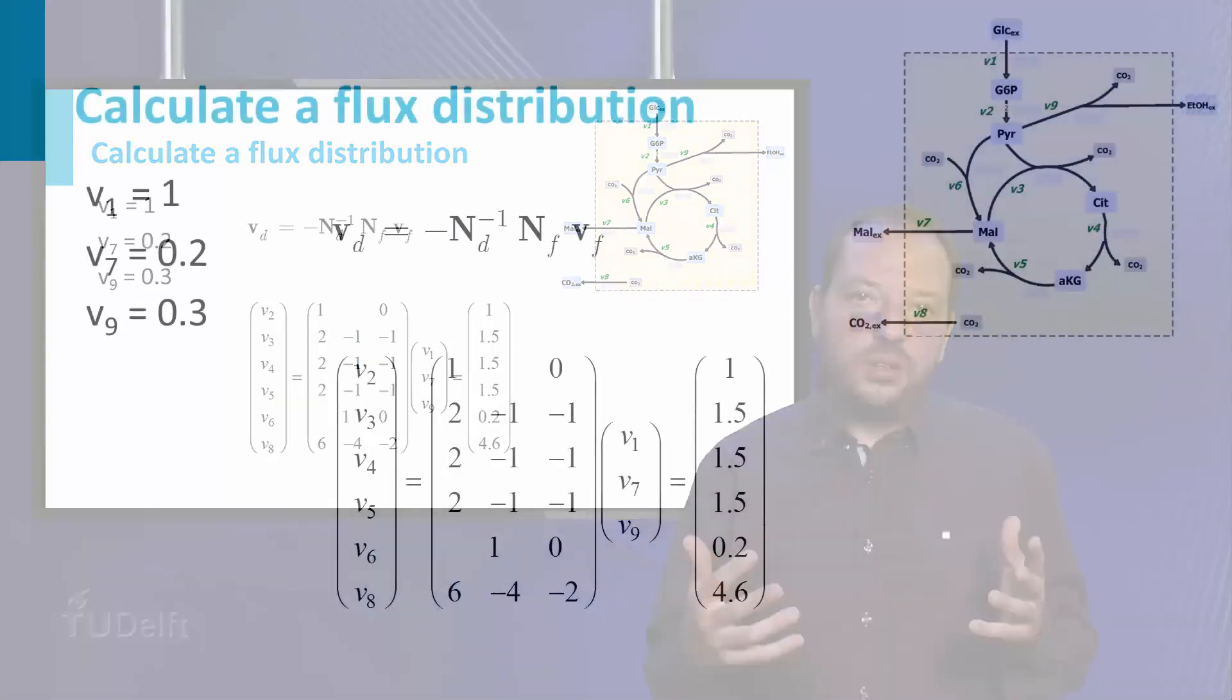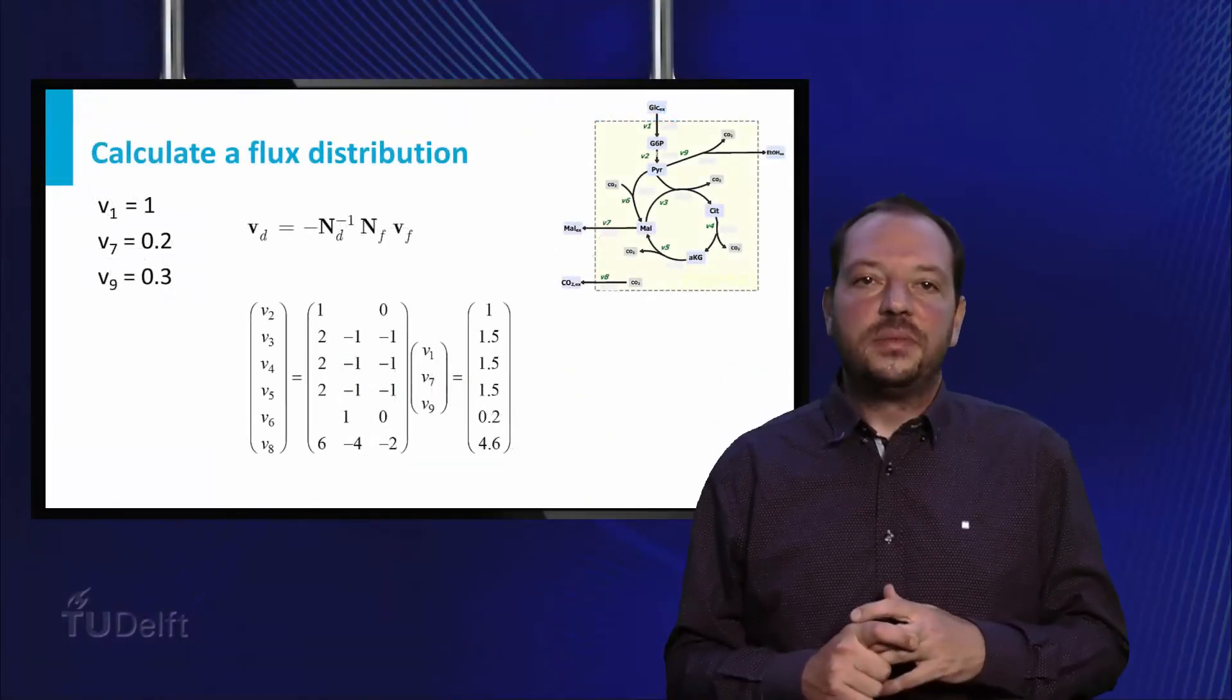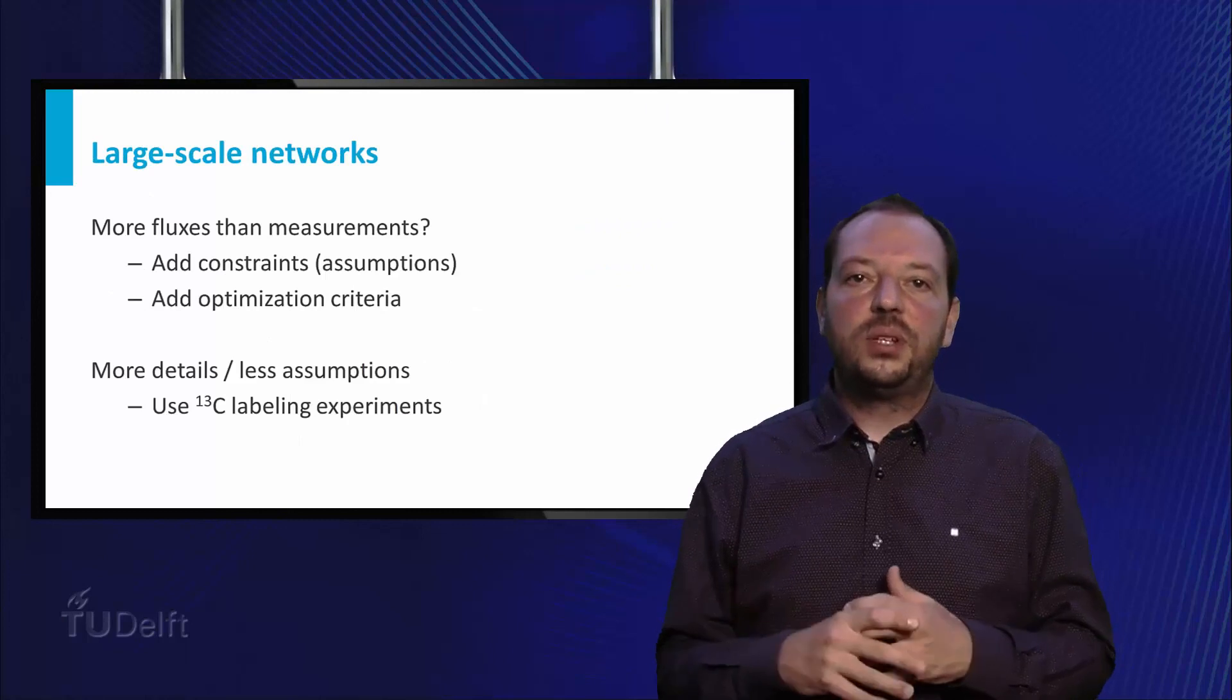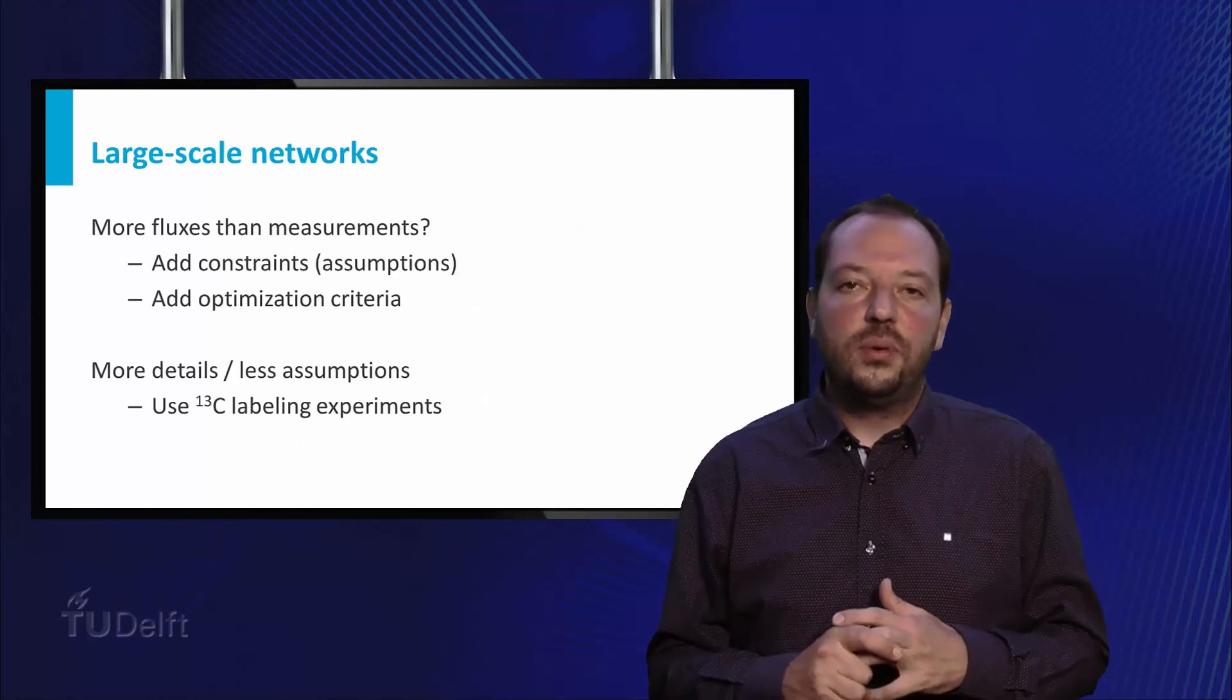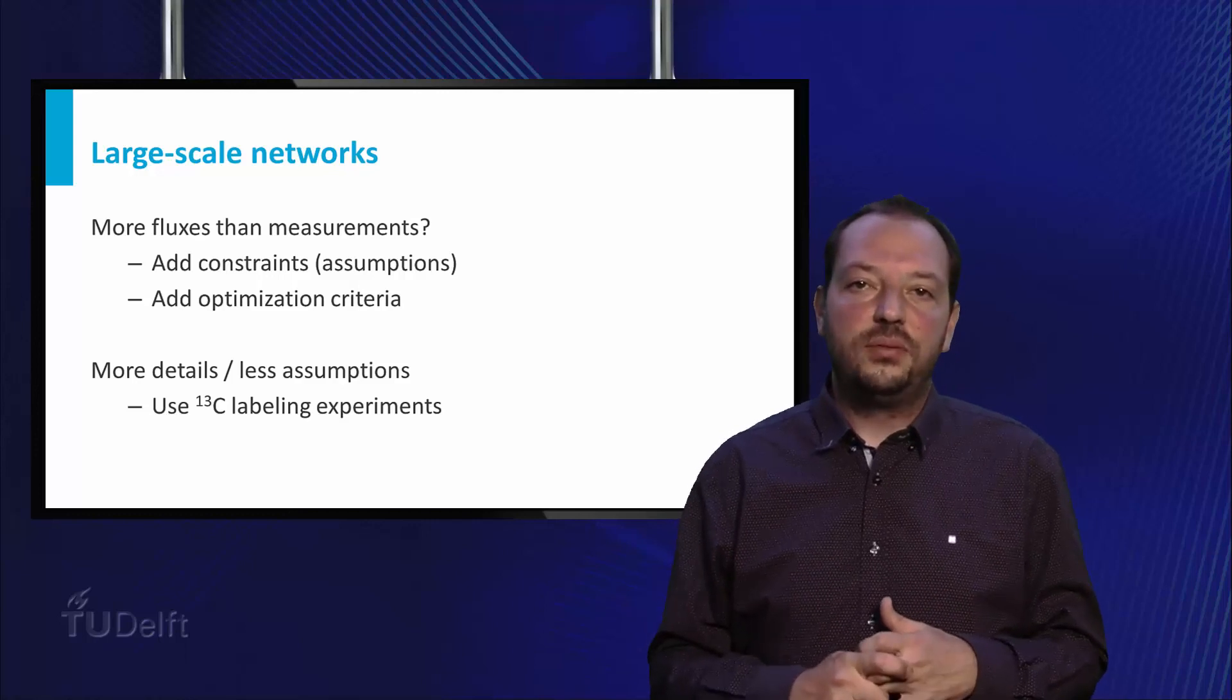This approach works for networks of basically any size if sufficient measurements are available. If there are not sufficient measurements, assume for example that we could only obtain two of the four extracellular fluxes, the system cannot be solved. There is information missing.